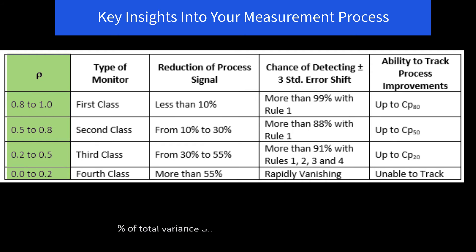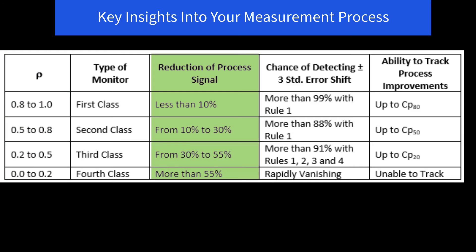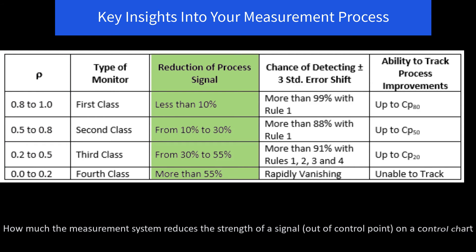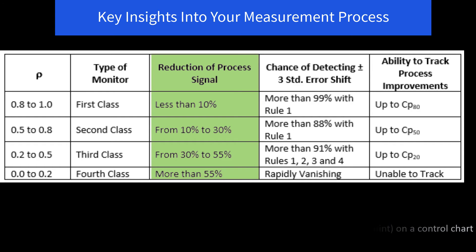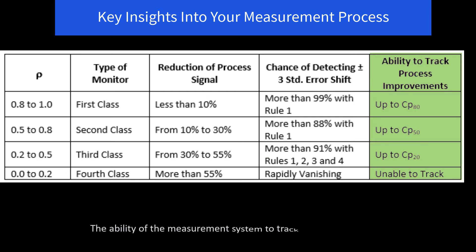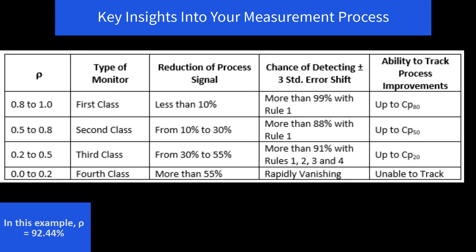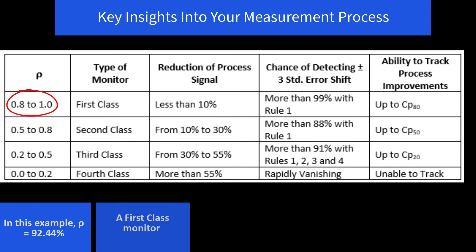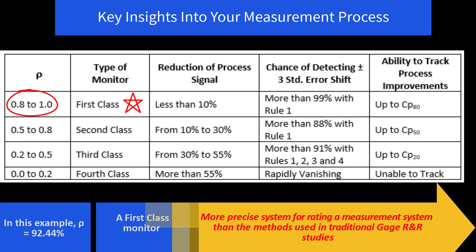Let's take a more in-depth look at these key insights. The first column is the percent of total variance due to product variance, which gives you the type of monitor. The next column is the reduction of process signal. Then you have the chance of detecting a large shift on your control chart, and how that changes depending on your type of monitor. Finally, the ability to track future process improvements. In this example, rho is 92.44%, so it's a first class monitor — the best you can have. This is a more precise system for rating a measurement system than the methods used in traditional gauge R&R.